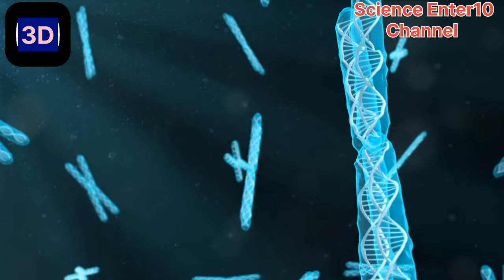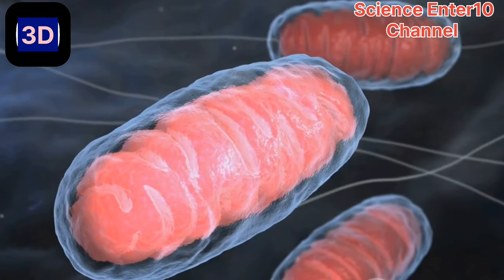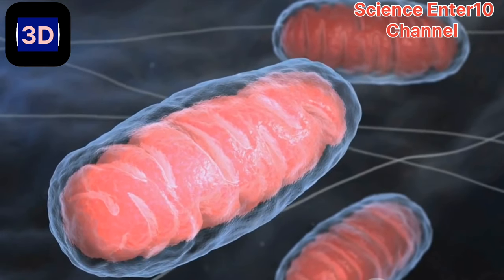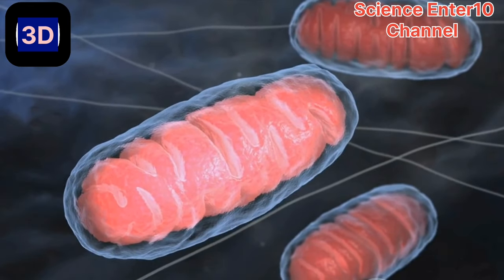This is crucial for the continuity of life, as any mistakes in this process could lead to severe consequences, such as genetic disorders or even cancer. From the tiniest microorganisms to the largest mammals, mitosis is a universal biological process that is constantly occurring within us and around us.